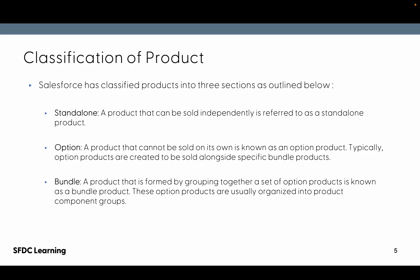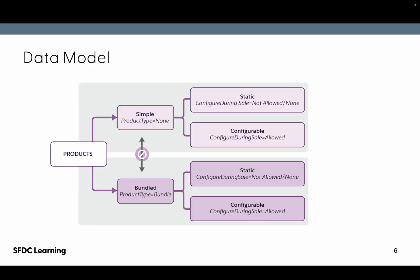Now let's see the data model — this shows how products will look. There is a product which can be simple or bundle. Simple means standalone. A simple product can be static, meaning it cannot be configured, or it can be configurable. Don't get confused — we'll see this.